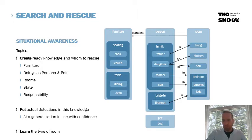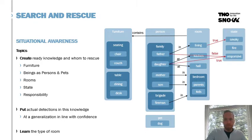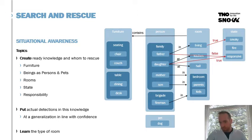Persons are likely to be found within a room. So in this case, the father is in the living room, the daughter is somewhere between the kitchen and the hallway, while the mother, the son, and the fire brigade have not yet been found, though it is known that they are in a particular room. Persons and rooms can also be in a state — the living room could be in a smoky or on-fire state, while persons could be responsive or not responsive. Father is not responsive, daughter is responsive.